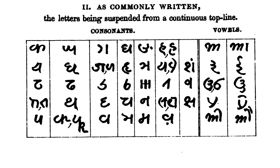Kaithi was also nicknamed 'Shakasta Nagari' due to its relationship with Devanagari being akin to the relationship between the widely used cursive Nastaliq of the time and the more formal and fully expressive printed Nastaliq scripts.